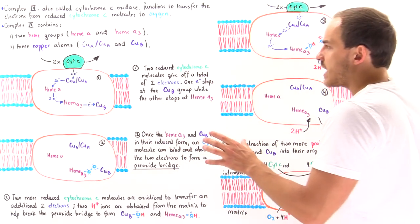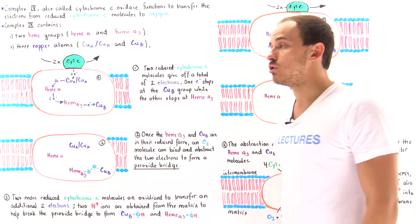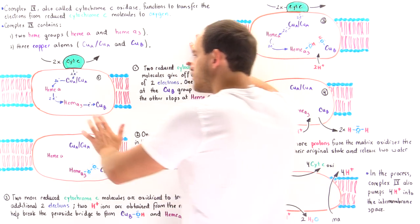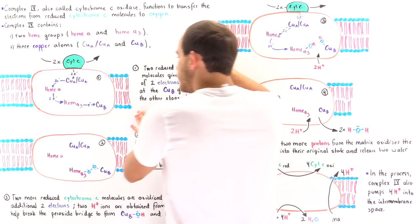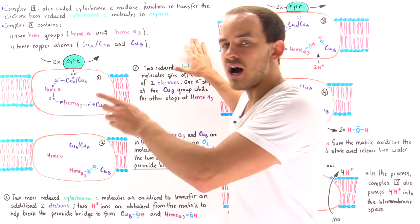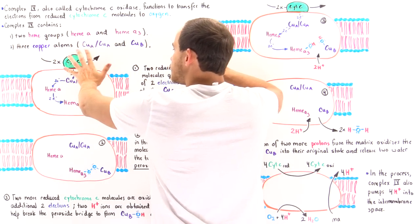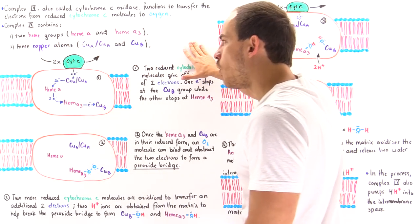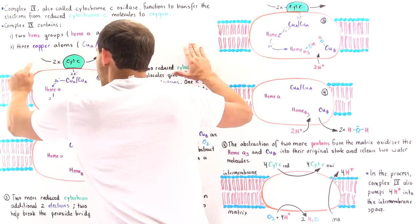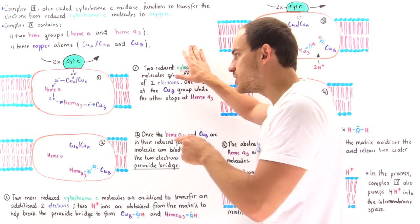Now let's go through the steps of how electrons are transferred from the reduced cytochrome C molecules produced along Complex 3 onto oxygen to form water molecules. The cytochrome C in its reduced form dissociates from Complex 3, travels, and binds onto Complex 4. Once bound, it transfers an electron initially to the copper A copper A center, then the electron goes on to heme A, then to heme A3, and ultimately ends up reducing copper B.